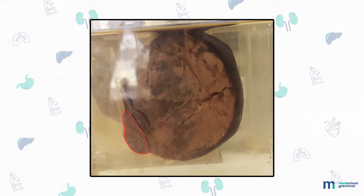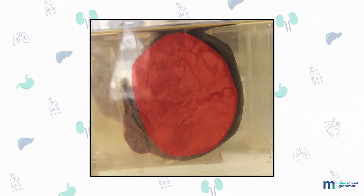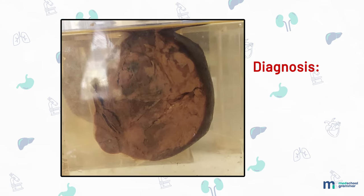Specimen of kidney with tumor. A small strip of normal kidney, 3 by 0.5 centimeter, seen at the lower periphery of the specimen. The remaining kidney is replaced by a tumor, 11 by 10 by 1 centimeter, grayish white with variegated hemorrhagic and pink translucent appearance. Diagnosis: Wilms tumor.